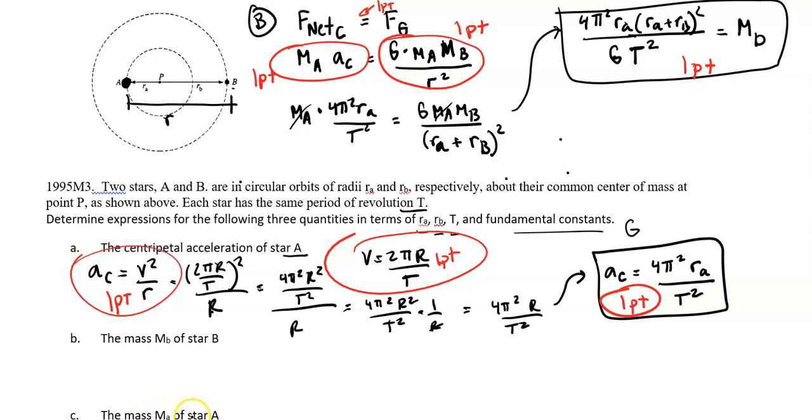Let's go ahead and look at C. The mass M_A of star A. We already went through this, if we focus on star A, we can do the opposite and focus on star B. So essentially, we'll do M_B times a_c equals the same stuff. We go ahead and simplify. Instead of M_A canceling out, M_B will cancel out, and we'll be left with M_A. So our answer is going to be 4π² times R_B times R_A plus R_B squared over GT² equals M_A.